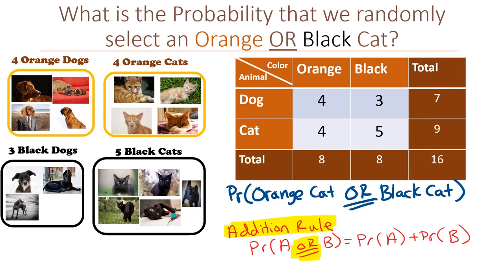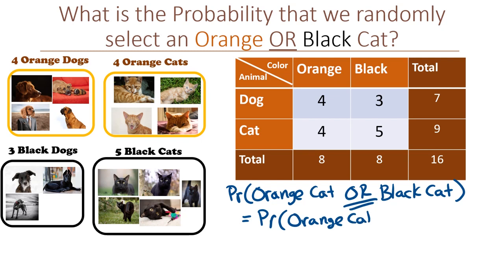So by the addition rule, the probability of being an orange cat or a black cat equals the probability of being an orange cat plus the probability of being a black cat, which is 4 out of 16 plus 5 out of 16, which is 9 over 16.